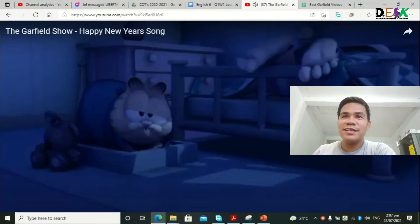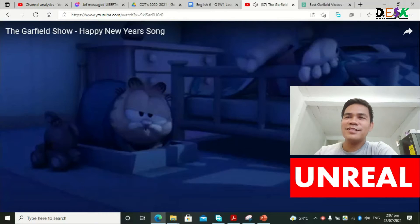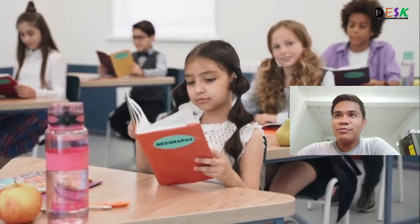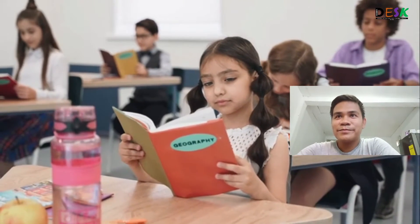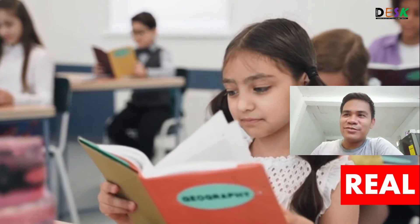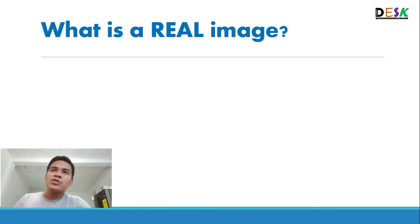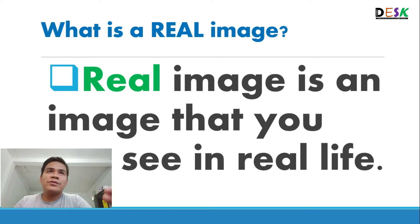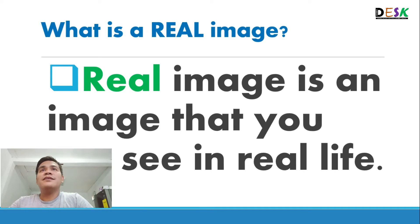Do cats really dance and sing like that? Of course that is unreal. Next, there's a beautiful girl reading a geography book — real or unreal? I bet you also read your book, so that is real of course. A real image is an image that you can see in real life. Whenever you wake up and experience things every day — making coffee, drinking milk, watching birds fly — those are real images.